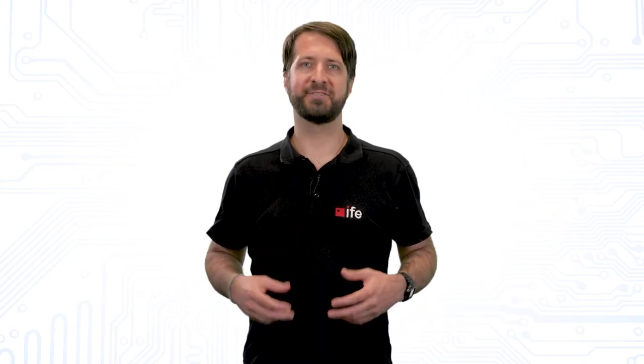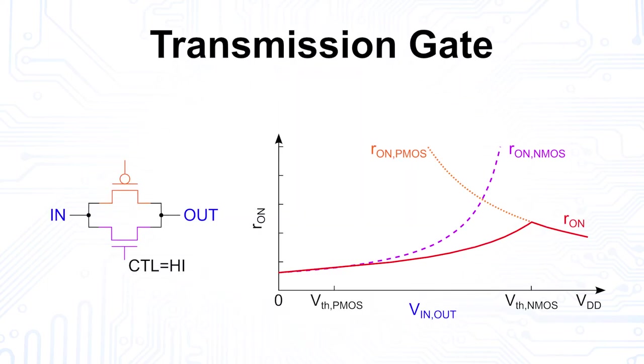One problem of this circuit is its ON resistance, which depends on the level of the input signal. In this figure, we see the resistance of the transmission gate that is switched ON as a function of the input voltage. We see that the resistance of the NMOS increases with increasing input voltage, while that of the PMOS decreases at the same time. The total resistance during a transition of the input signal from low to high for a switched ON transmission gate is shown here. We can see that the total ON resistance depends on the channel voltage, because the transistors conduct differently well for different voltages.